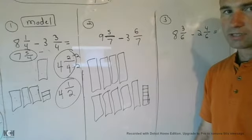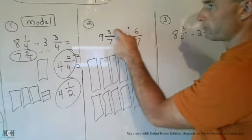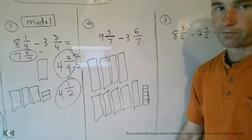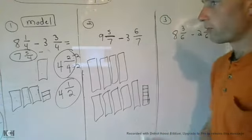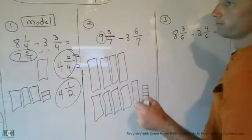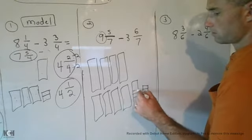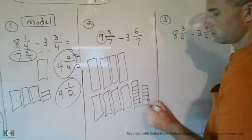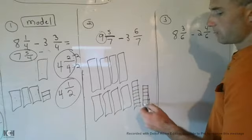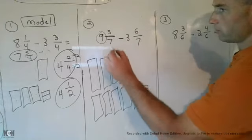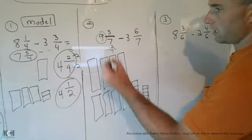So now I have 9 and 5/7, I'm taking away 3 and 6/7. So maybe the question I should ask myself first is can I take away my numerator from, can I take away this numerator from this numerator? Can I take away six from five? So if you have five dollars, can you give me six? No. So therefore I'm going to need to break this whole number up into seven parts, one of them.